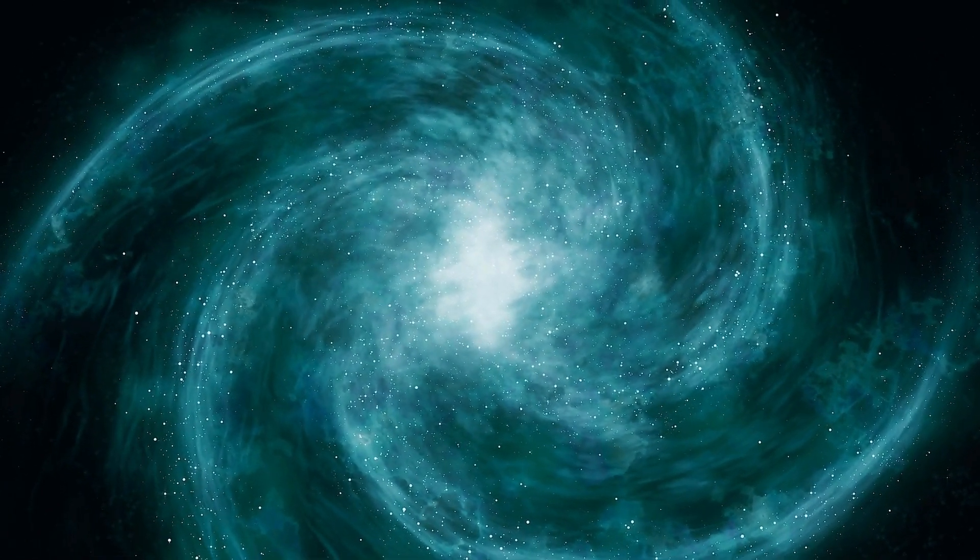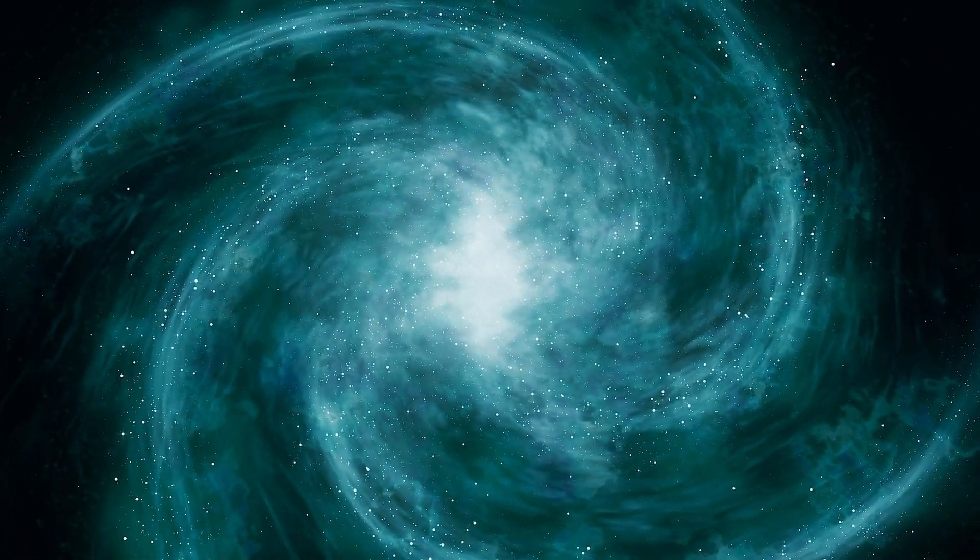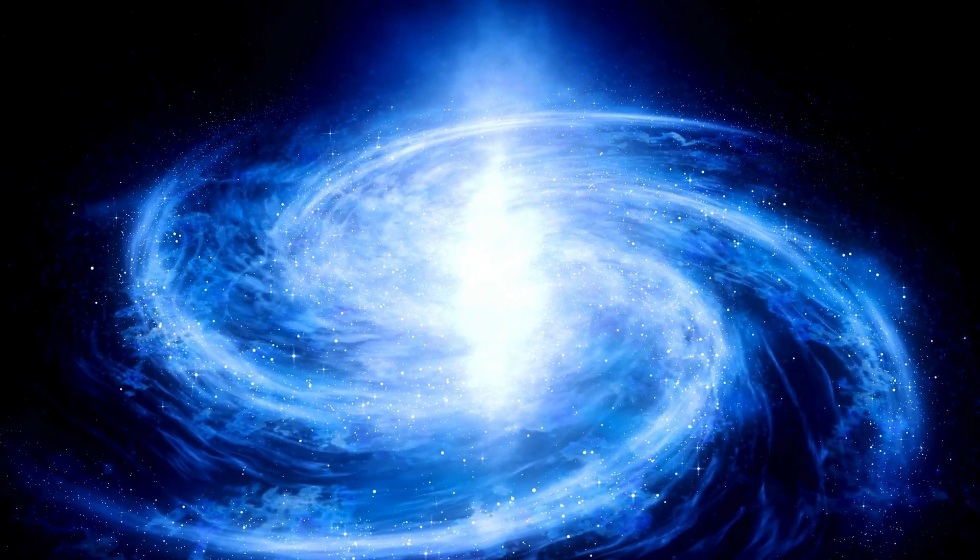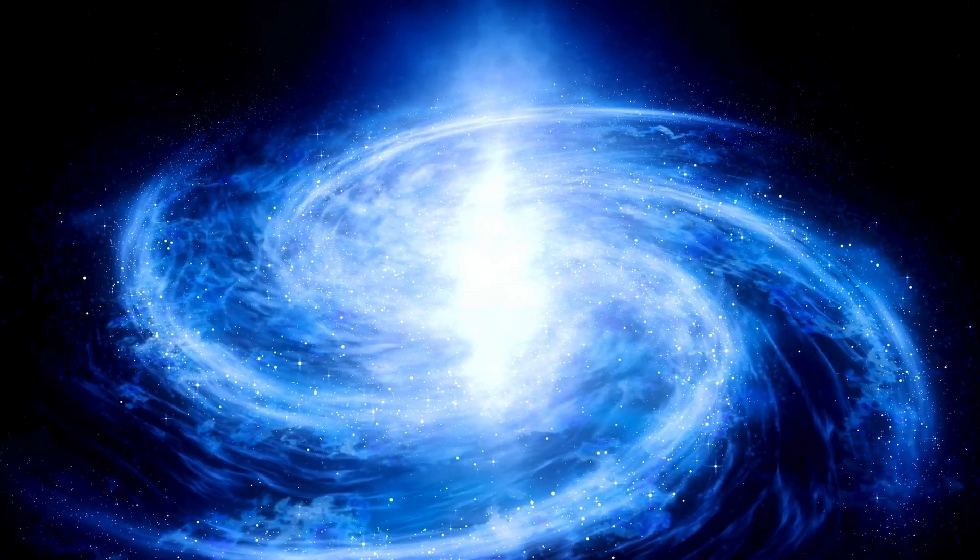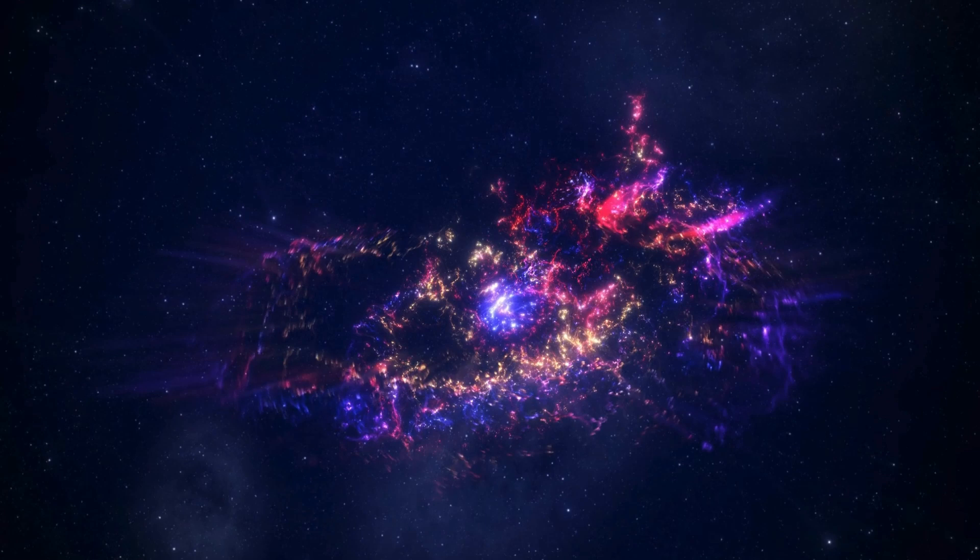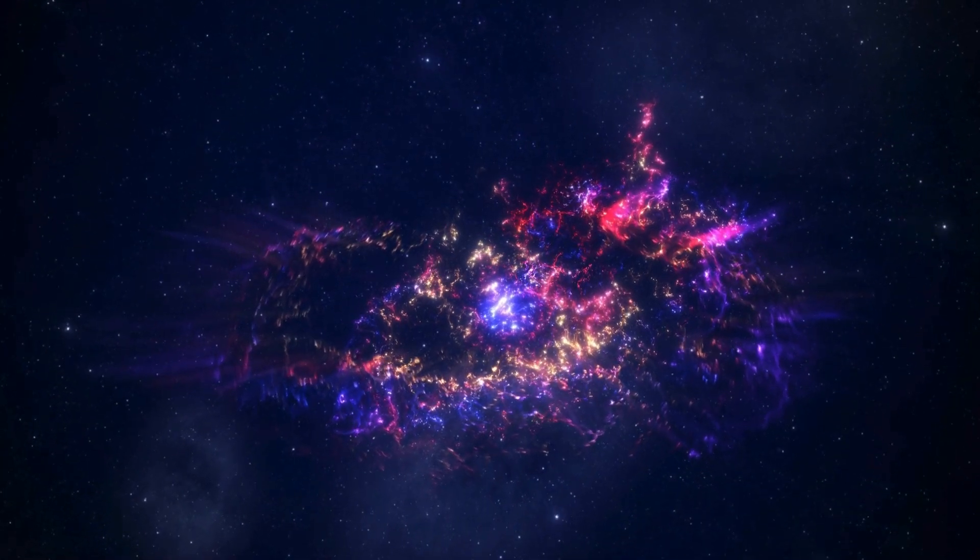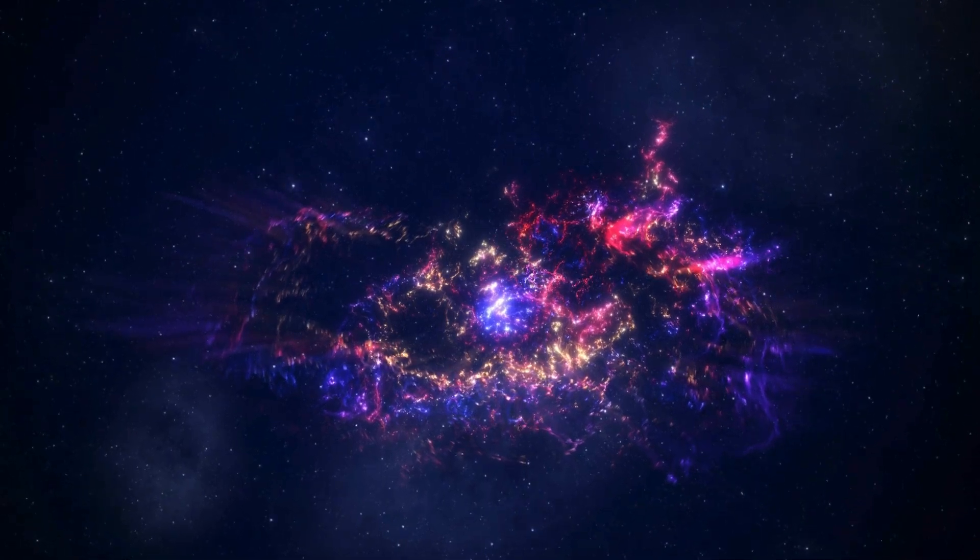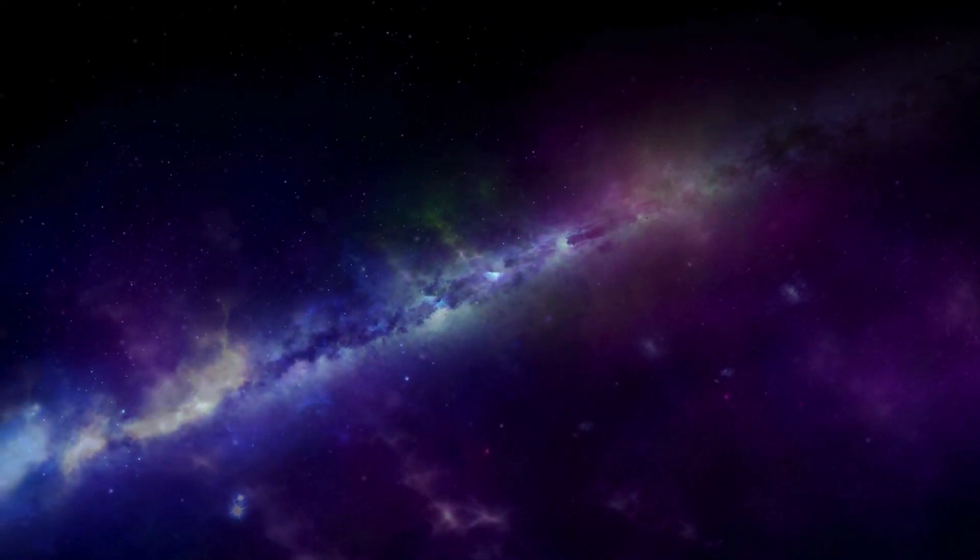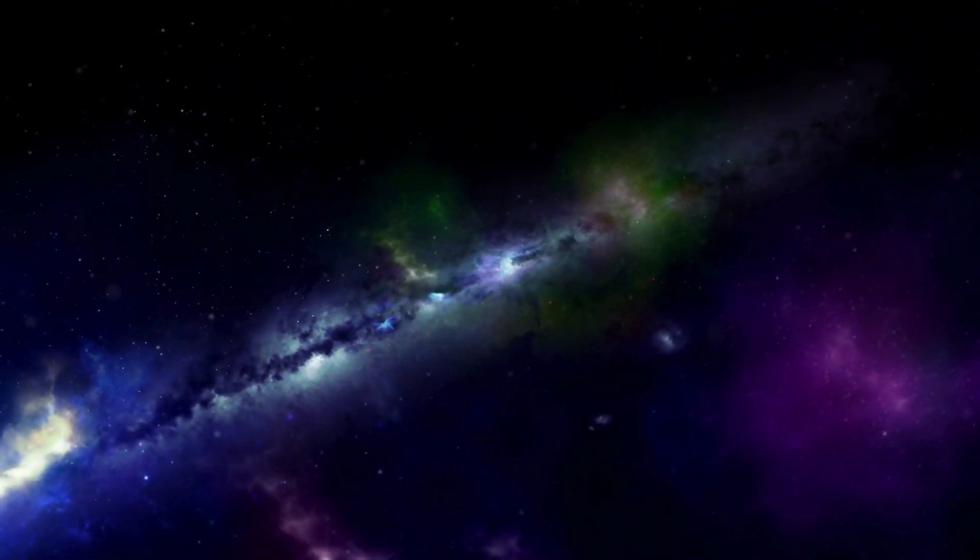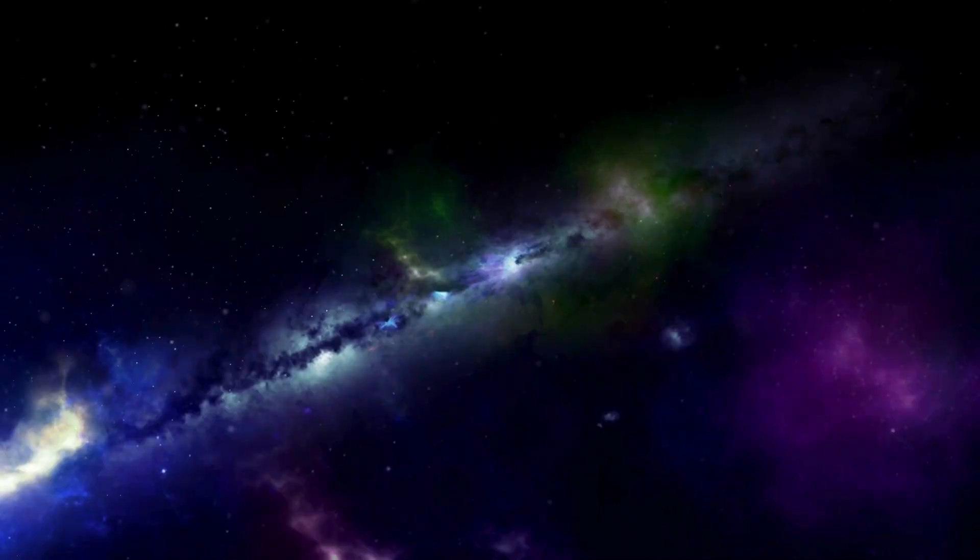The solar cycle is approximately 11 years long, during which the Sun's magnetic field undergoes a series of changes culminating in the inversion of its poles. At the beginning of the solar cycle, the Sun is in solar minimum, characterized by a low number of sunspots and minimal solar activity. The magnetic field is generally simple and bipolar.